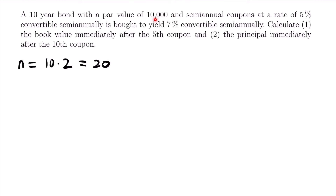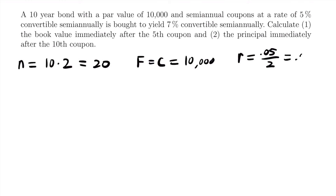The par value is $10,000, so the face value F and redemption value C both equal 10,000 since the problem states nothing different about redemption. The coupon rate R equals 0.05 divided by 2 equals 0.025, because these rates are annual nominal rates convertible semi-annually and must be divided by 2. Similarly, the yield rate J equals 0.07 divided by 2, which equals 0.035.